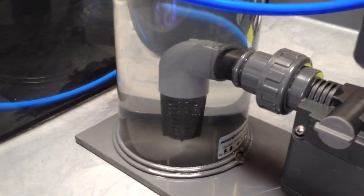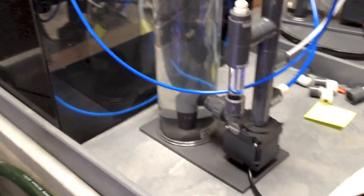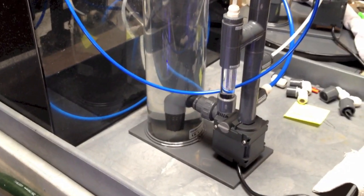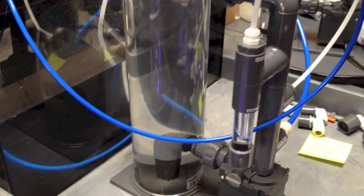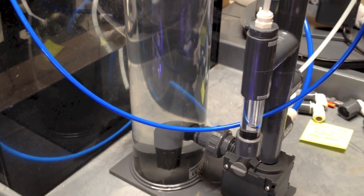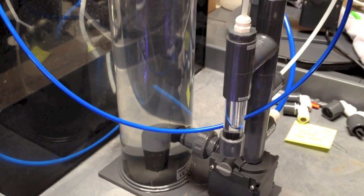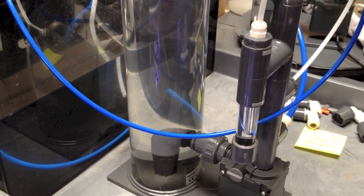The media that we recommend for this reactor is the CaribSea Arm Large or Medium, or sometimes they call it Coarse. They change names from time to time. And that'll give you the optimal results. I don't recommend anything smaller, and I specifically do not recommend mixing media sizes.